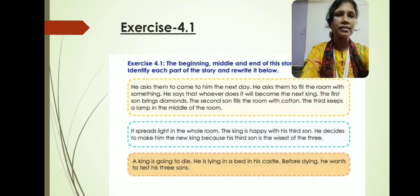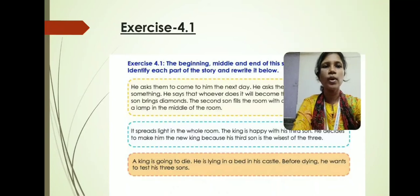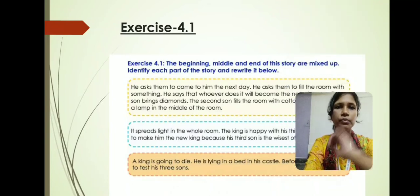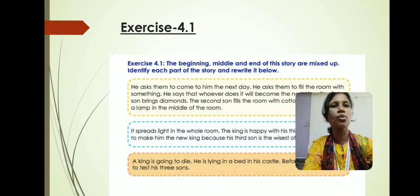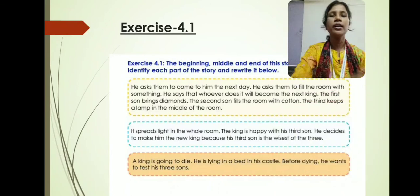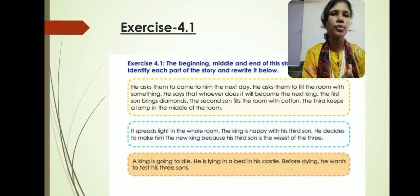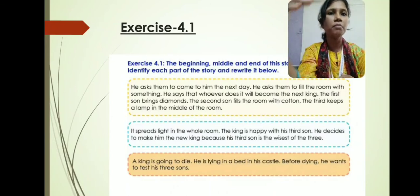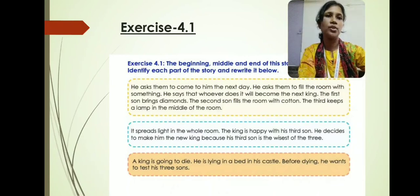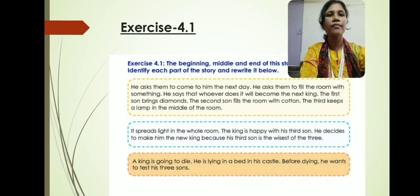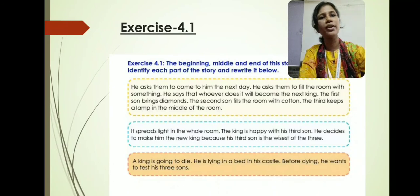Now let us move towards exercise 4.1. The beginning, the middle, and the end of a story are mixed up. We need to identify each part of the story and rewrite it. In this exercise, three paragraphs are given but not in the correct order — they are given in an unsystematic way. We have to make it systematic by first identifying and then rewriting the story.